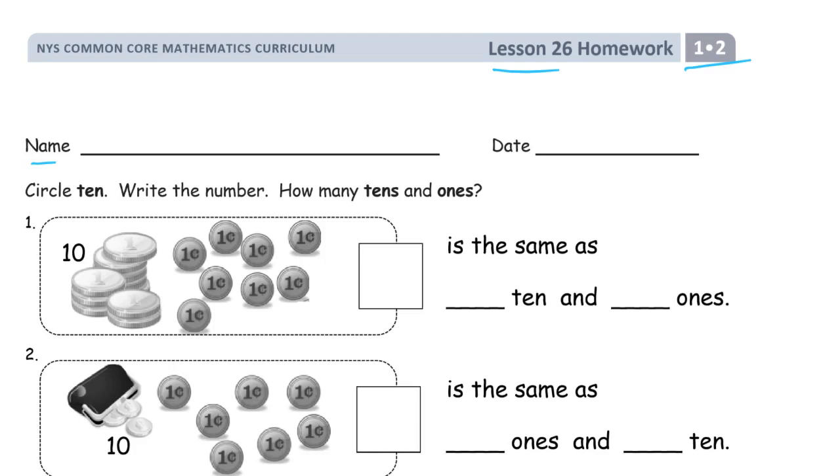What we're doing for each of these, we have a picture, we're going to circle 10 in the picture and then write the number. We're just figuring out what teen numbers it makes.